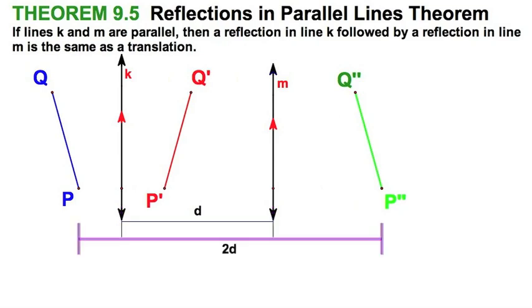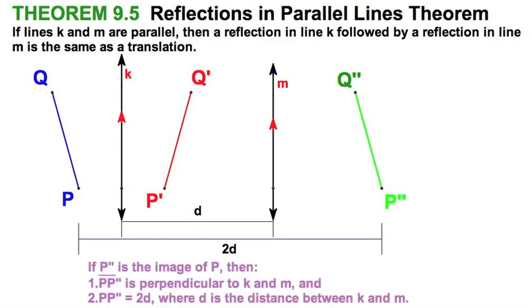And you've got the distance between the final translation or double reflection. And that segment P to P prime would be perpendicular to the two original lines.